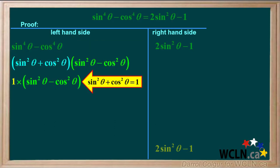A basic Pythagorean identity tells us that sine squared theta plus cos squared theta is equal to one.